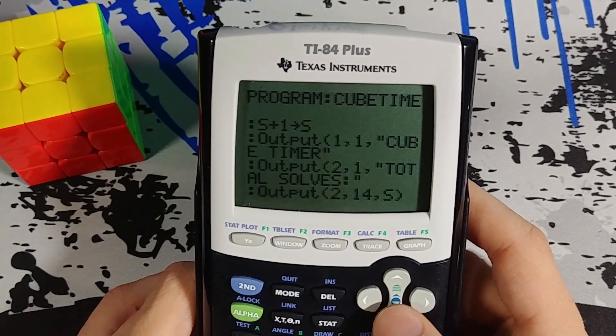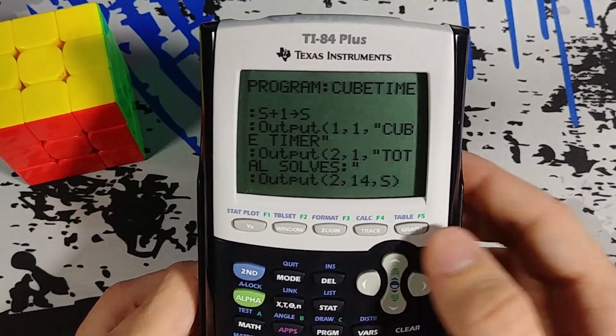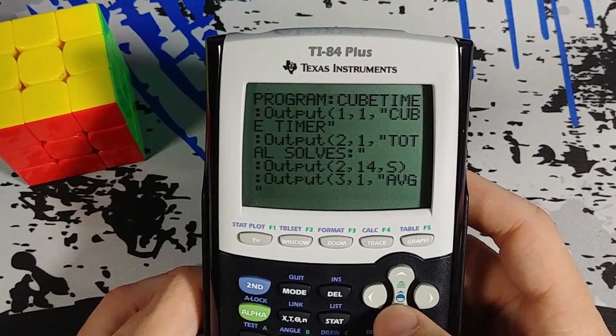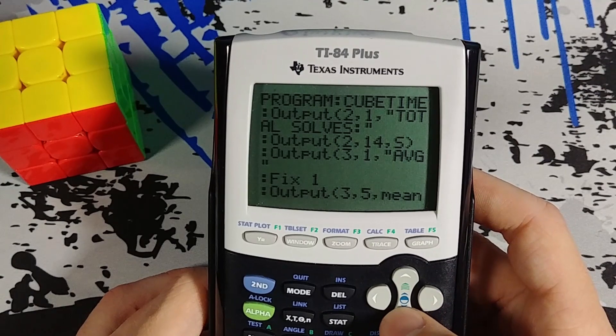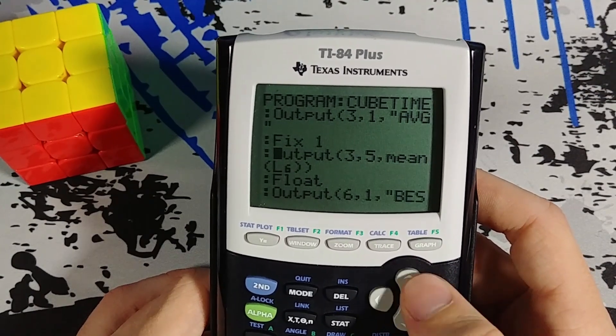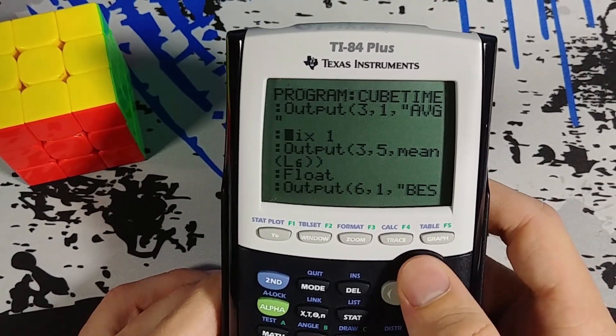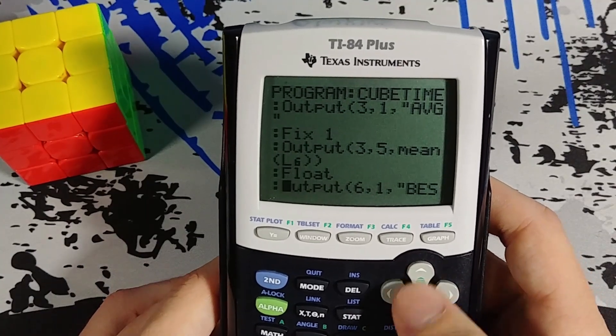And then we're going to actually output all of our title screen again. But this time we're going to add some stuff. So here you can see I'm outputting average. And I'm doing the mean of list 6. But above it I have fixed 1 and below it I have float.